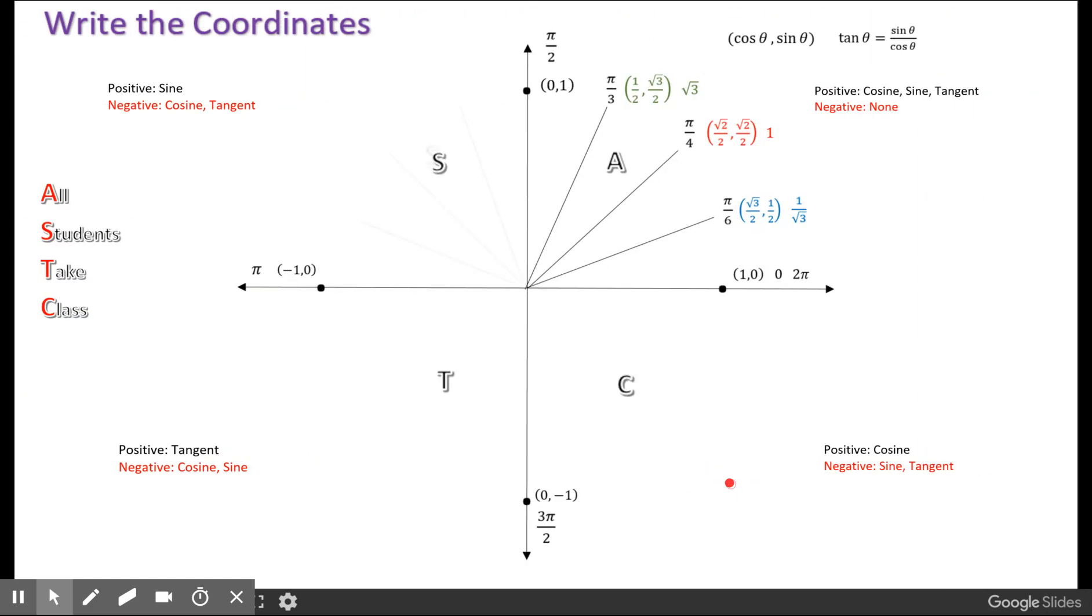So let's write the coordinates. Keep in mind that we're going to be matching our angles with the right reference angle. The distance from the x-axis is our reference angle. So we have a 60-degree distance or pi over 3 reference angle here.